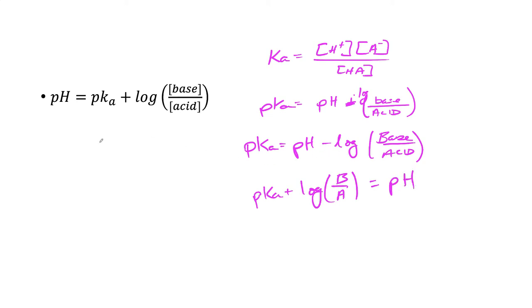So to change the pH by one unit, to get it from 4.5 to 5.5, we need to add 10 times as much base as acid. This is the significance of a buffer solution: the pH does not change within a certain criteria, and that's plus or minus 1 on the pKa.